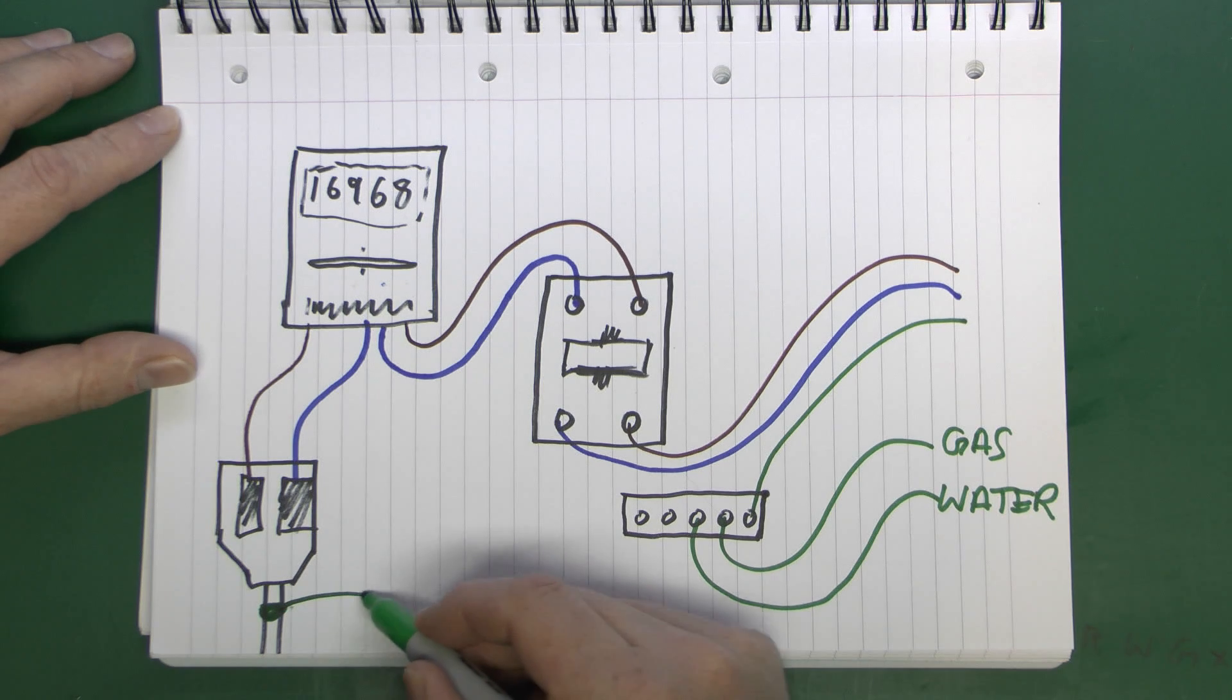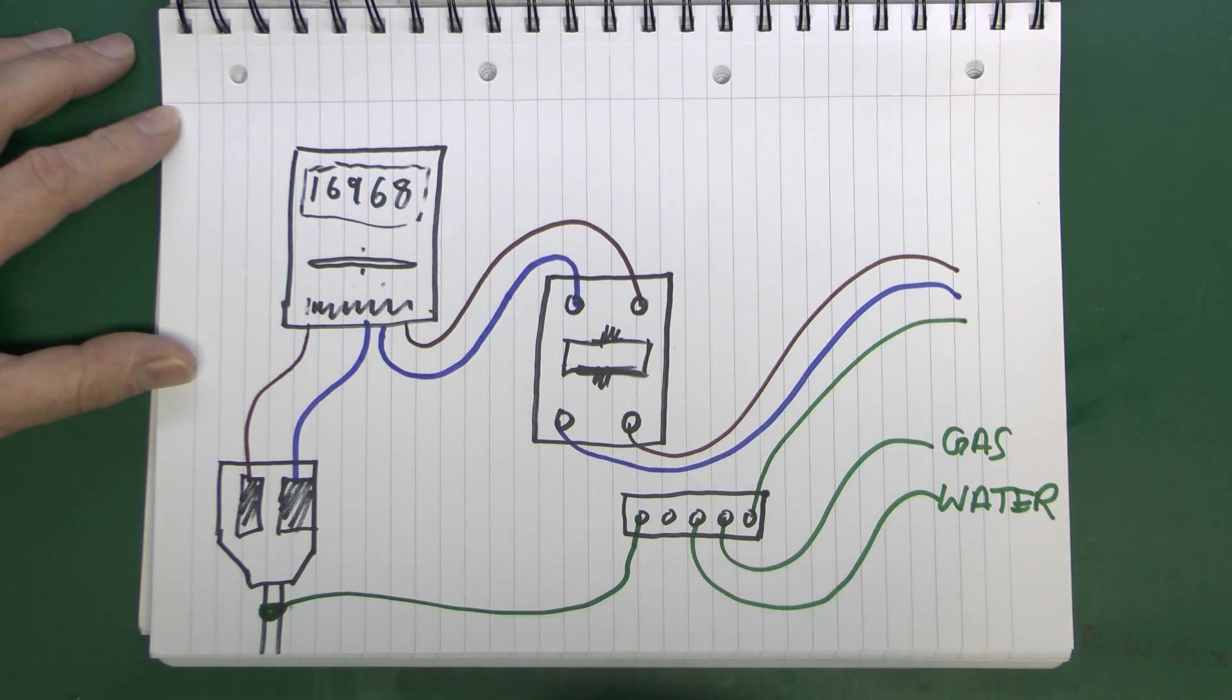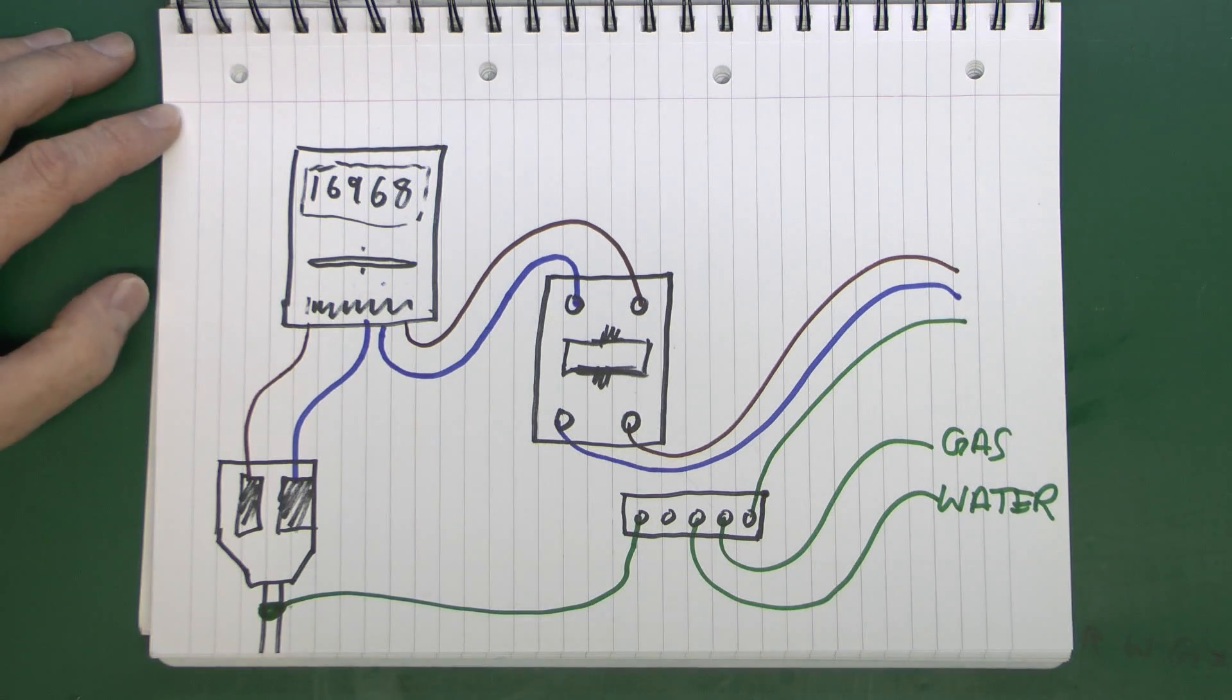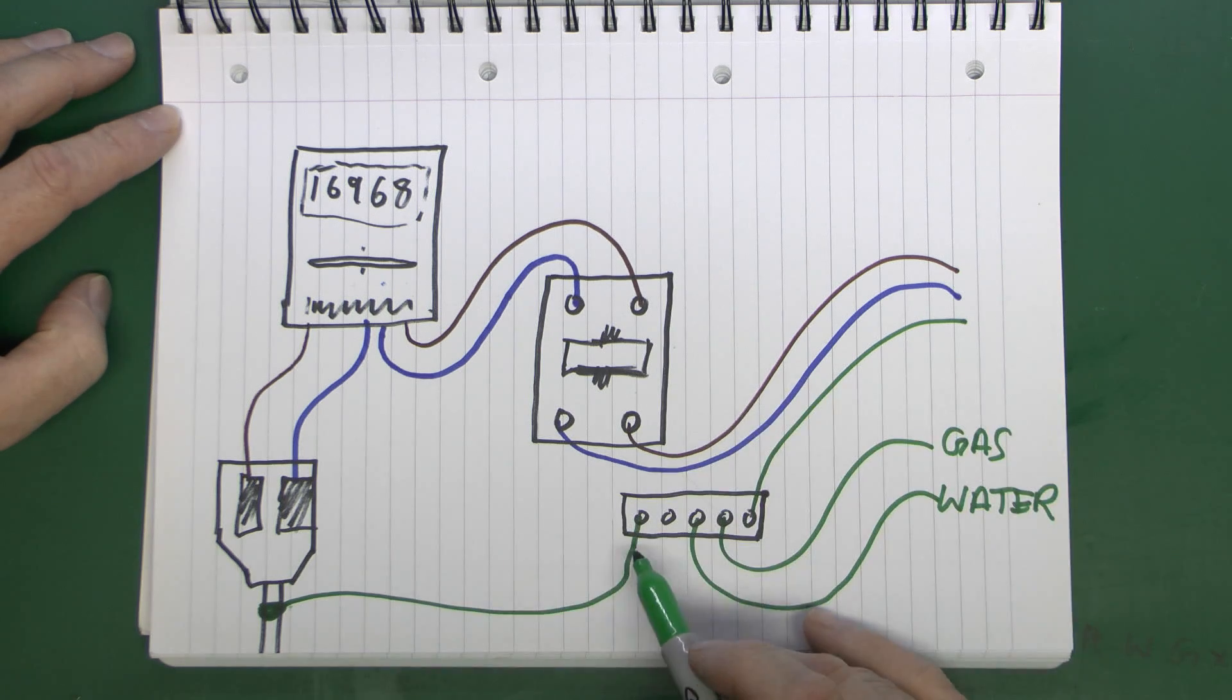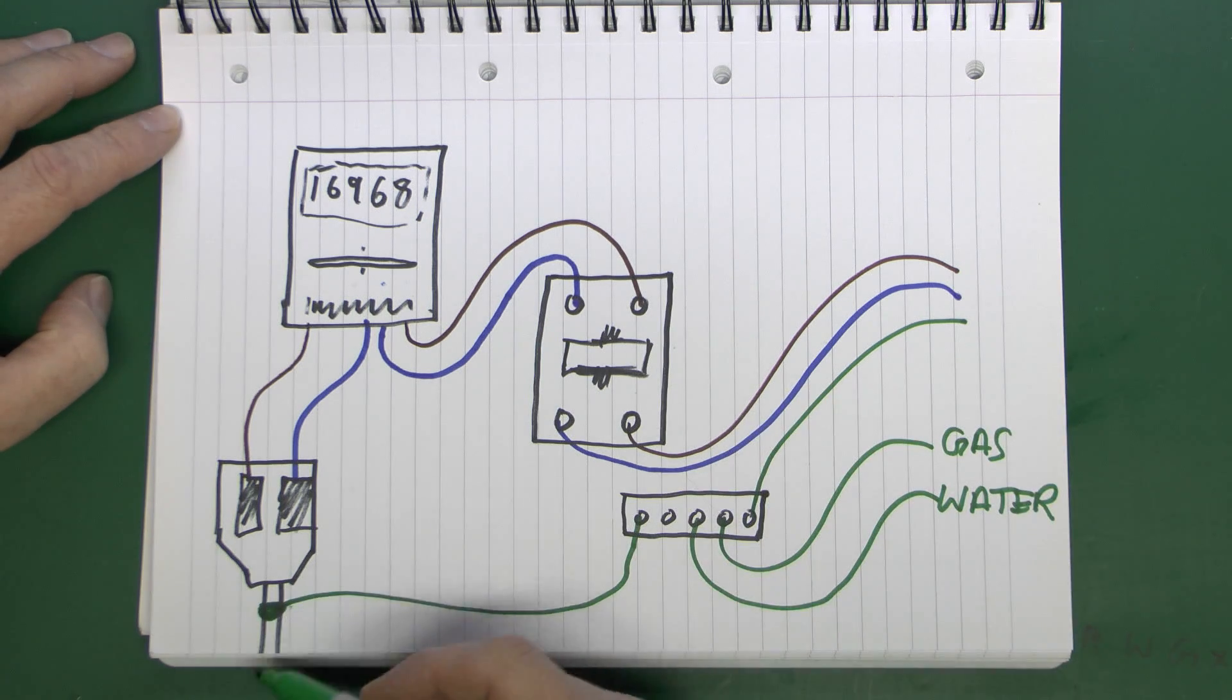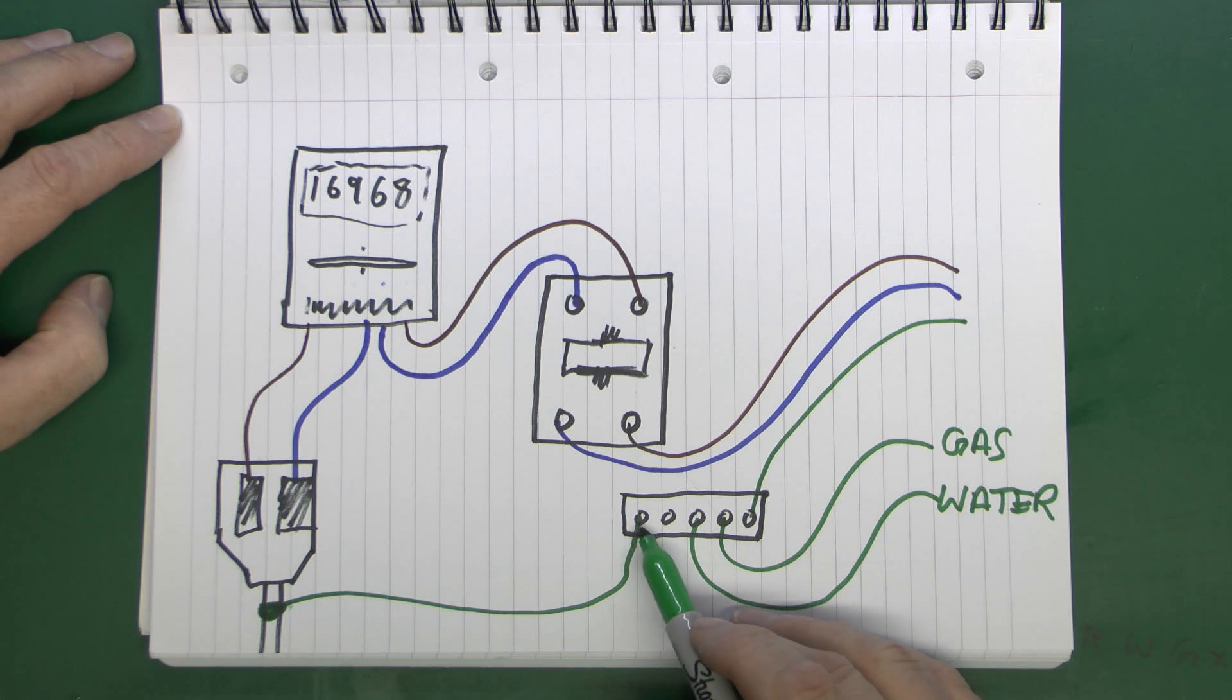That will come across and go into the earthing bar like that. Now in order to test this, what we need to do is to only test this piece here and the external earth connection, so we need to actually disconnect this from the actual earth bar here.